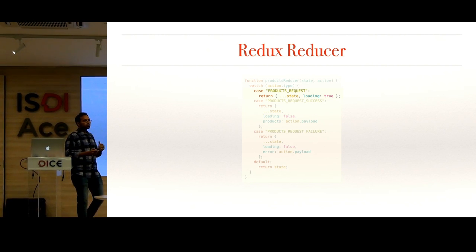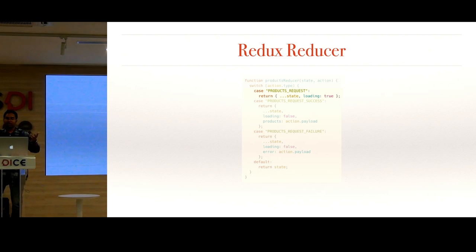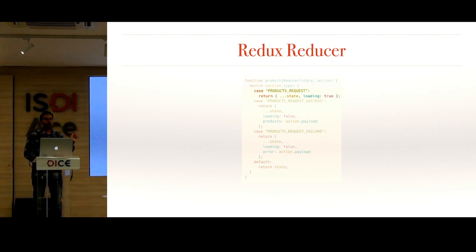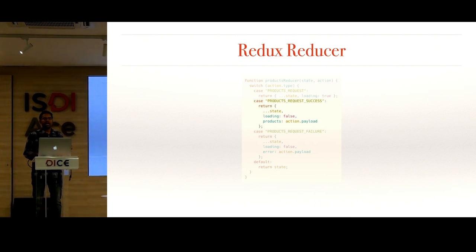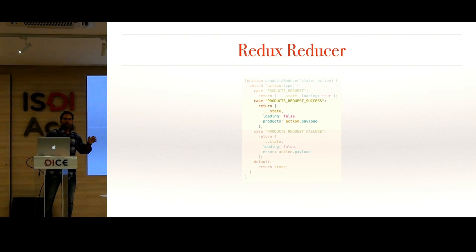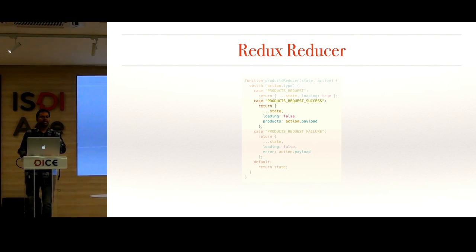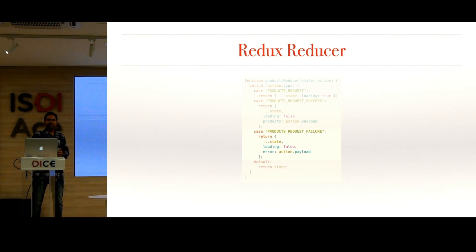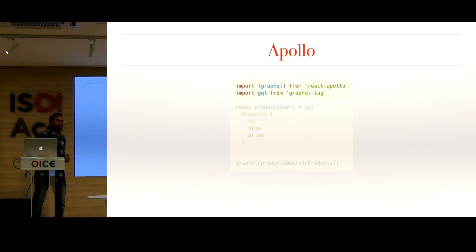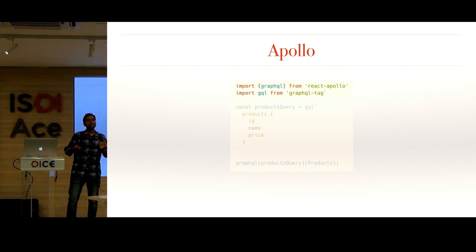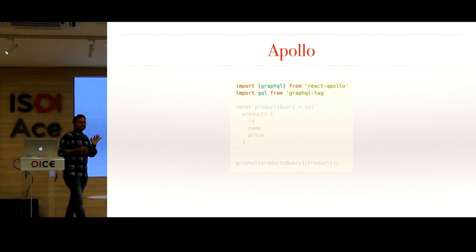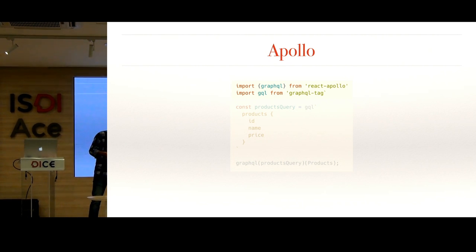In the reducer, we handle all three dispatched actions: on PRODUCTS_REQUEST we set loading to true; on success we set loading to false and store the product data; on failure we turn off loading and set the error. You can see that we've written a lot of logic for a very simple use case. And I haven't even mentioned data transformation and caching. For the simple use case of fetching data from the server and passing it to a component, we've written a lot of code.